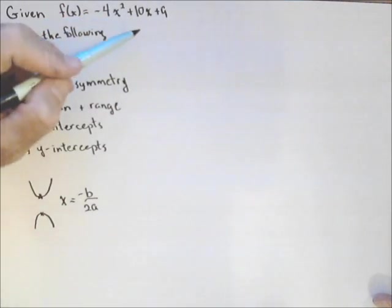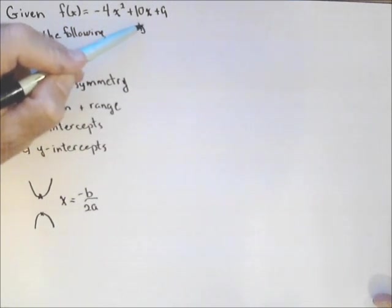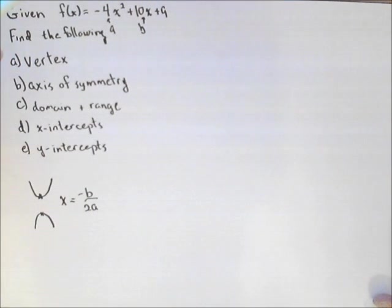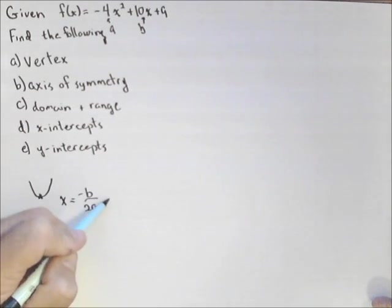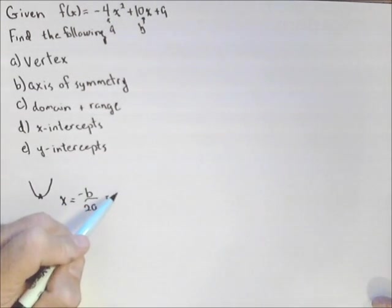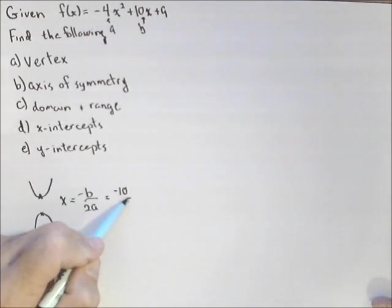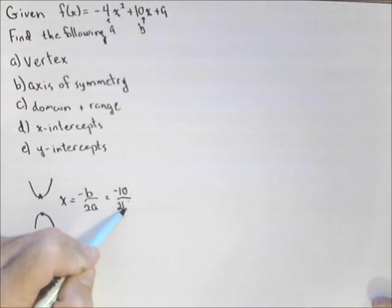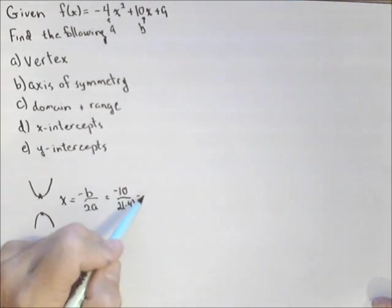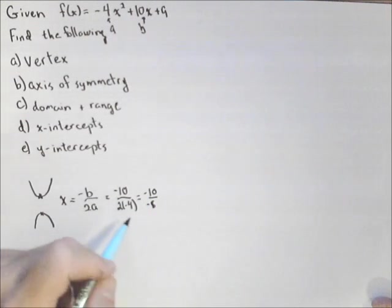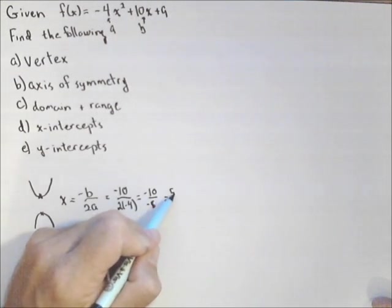So we have to identify b and a in our quadratic. Well, b is 10 and a is -4. So to find the vertex, what we're going to do is apply this. So -b/2a: -10/(2 × -4) = -10/-8 = 5/4.